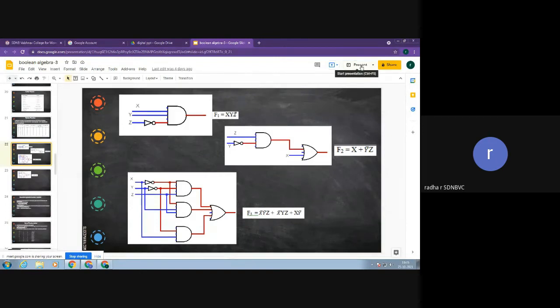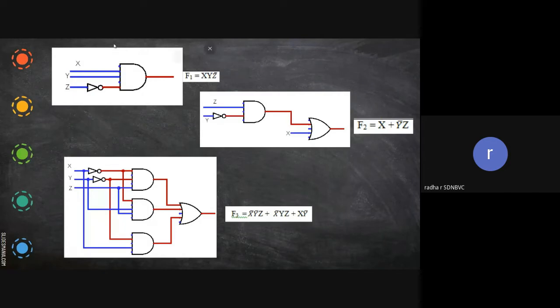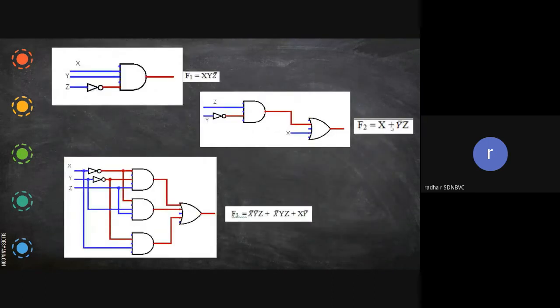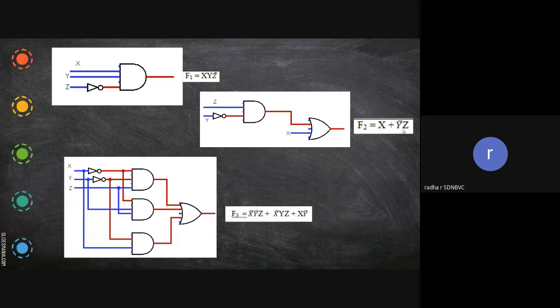Here it is, in this system it is not there. Now here what happens: x, y and z̄. Now we'll see the next equation: x plus ȳz. So x plus ȳz, here these two are OR gate.